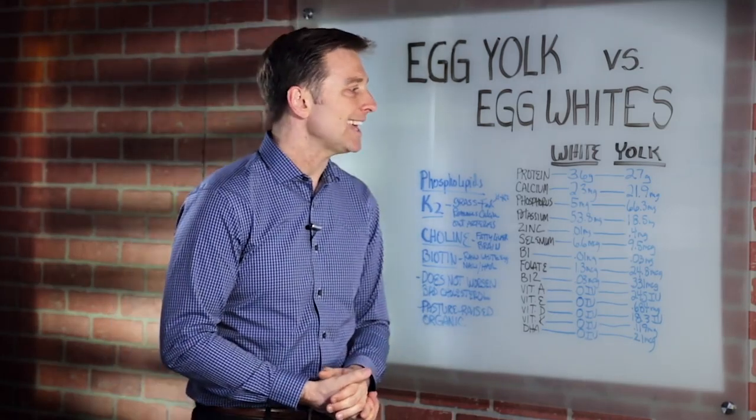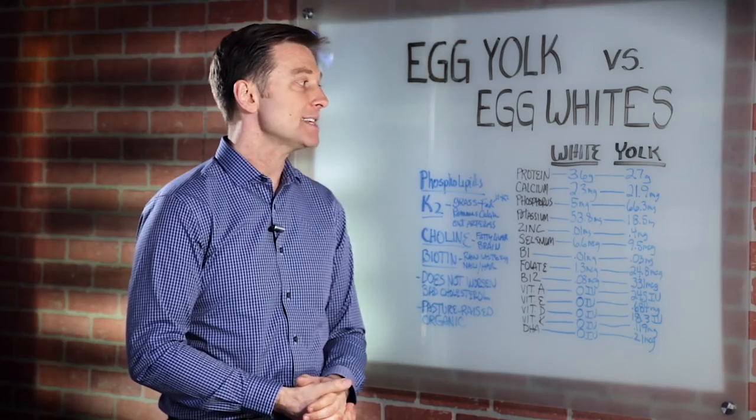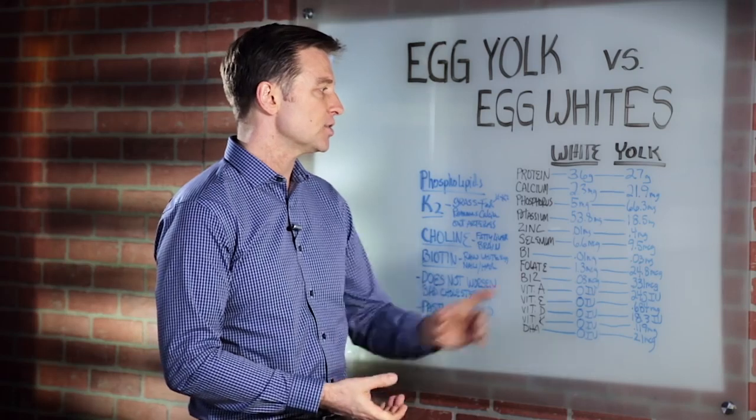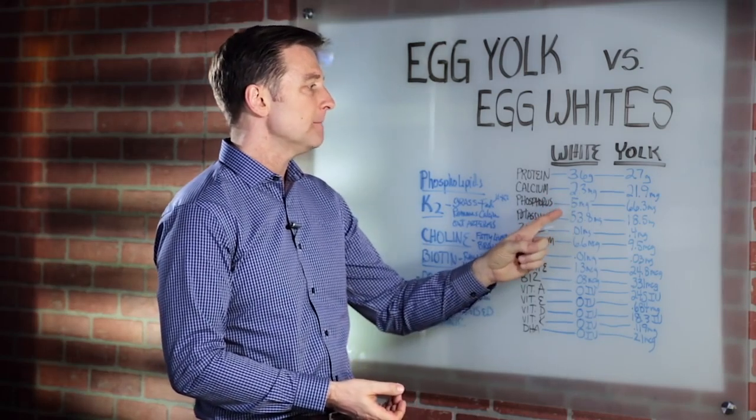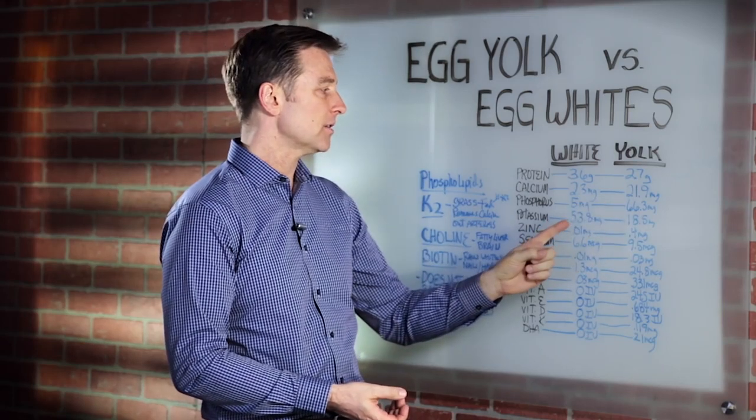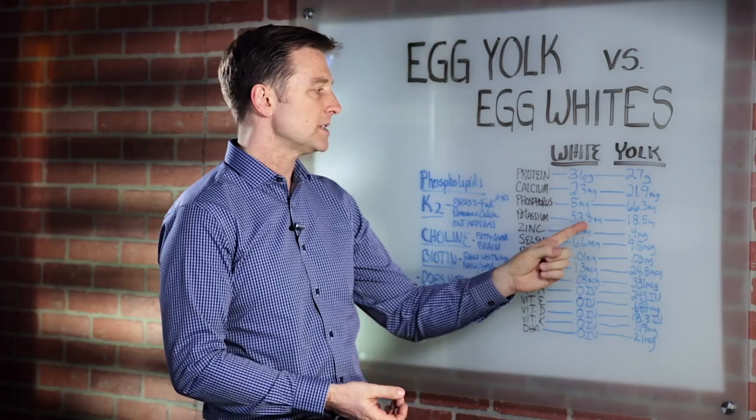Calcium, 10 times more calcium than the egg whites. It's 21.9 milligrams versus 2.3 milligrams for the whites. Look how much phosphorus, 66.3 versus 5 milligrams. Potassium. Well, look, the whites are a little more potassium.